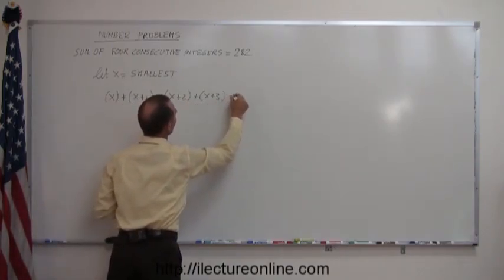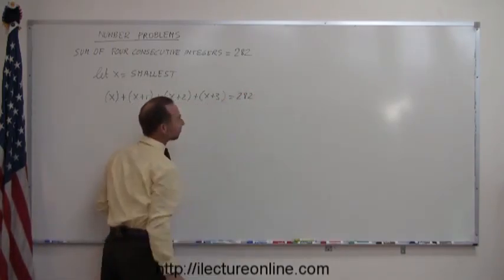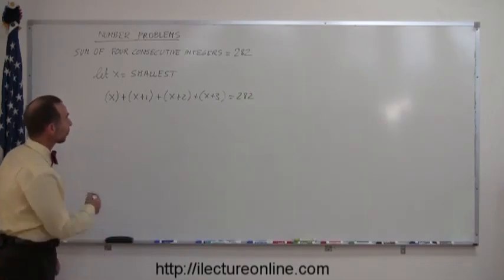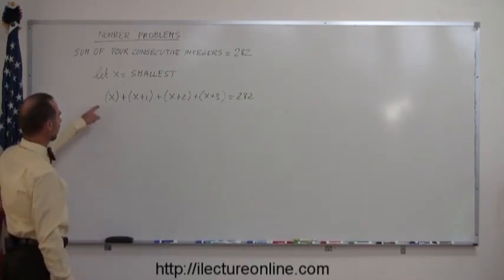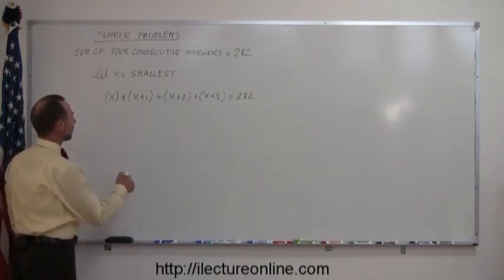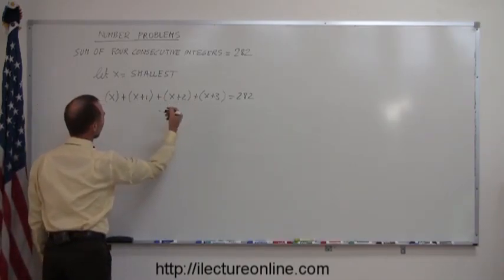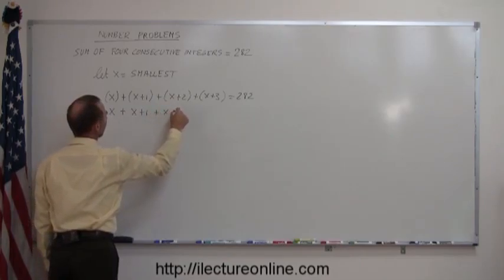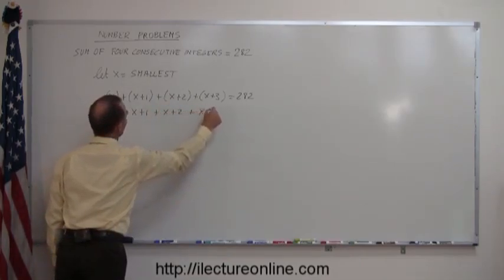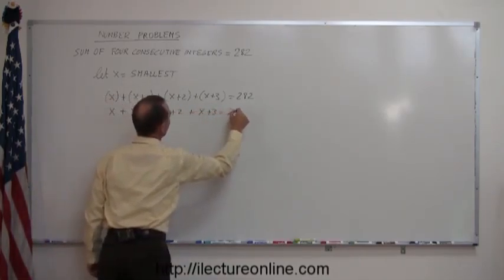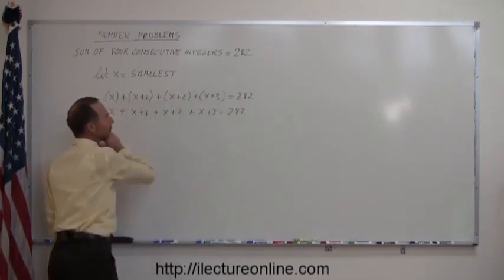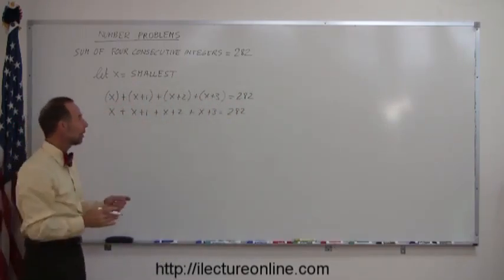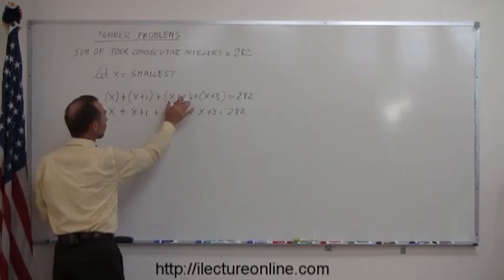And the problem tells us that when we add the four consecutive integers together, they add up to 282. Okay, and all we have to do now is solve this algebraically. First of all, I need to drop all the parentheses. Since I have nothing but additions, we can simply take those off. So this is x plus x plus one plus x plus two plus x plus three equals 282. So the reason why I put the parentheses on there is just to show you that I'm adding four consecutive integers.